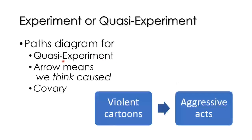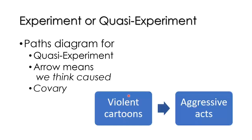But in a quasi-experiment, the arrow now means we think caused — and actually saying 'we think' doesn't sound that certain. So we use the term co-vary. Violent cartoons co-vary with aggressive acts, or the violent content of cartoons co-varies with aggressive acts. Possibly as the violence level goes up, the number of aggressive acts the child commits later on will go up.